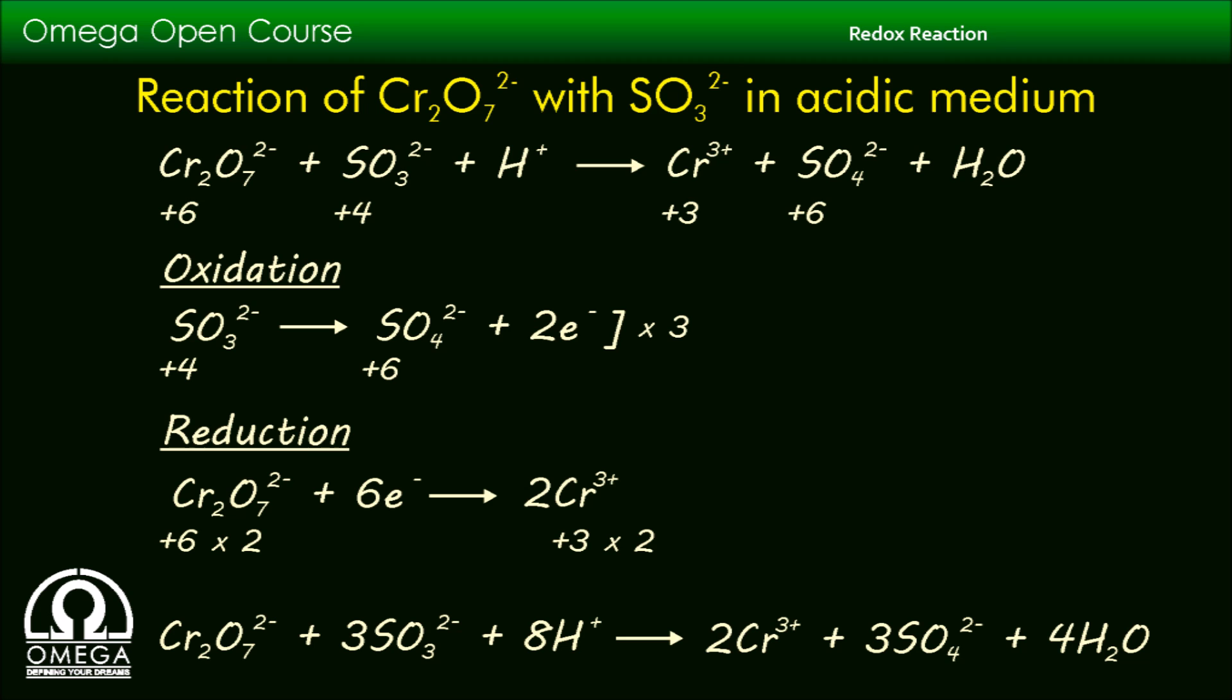Now we have to balance the oxygen atom with the help of H+ and H2O since the reaction is carried out in acidic medium. In the reactant side there are 16 oxygen atoms: 7 from 1 dichromate ion and 9 from 3 SO3^2- ions.